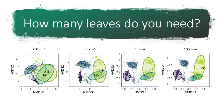We can calculate these metrics of insect herbivory as we sample more and more leaves, and use that to see when these metrics no longer change — that's when you can say you have looked at enough leaves for your study.